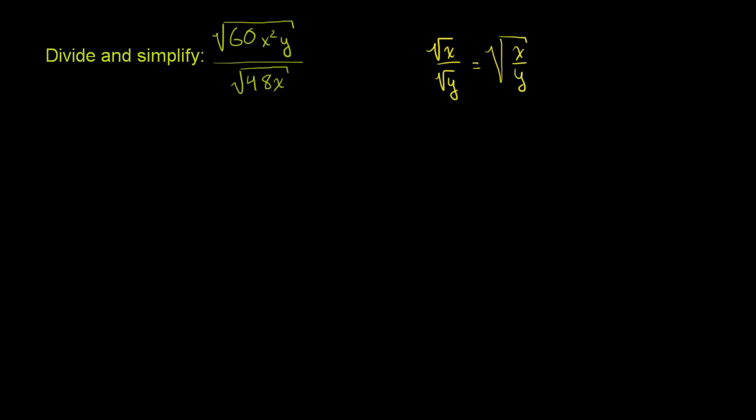So let's apply that over here. This expression is going to be the same thing as the principal root of 60x²y over 48x. Then we can look at the coefficients and try to simplify that. Both the numerator and denominator are divisible by 12. 60 divided by 12 is 5. 48 divided by 12 is 4.